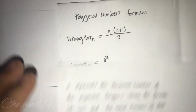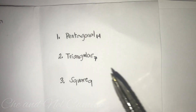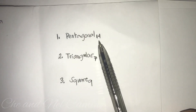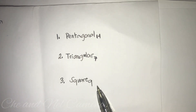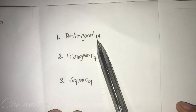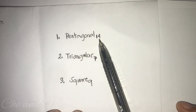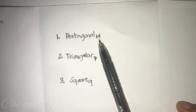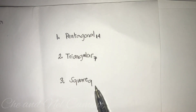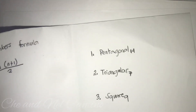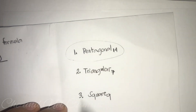Let's take these examples: Pentagonal(14), Triangular(7), and Square(9). In Pentagonal(14), the value of n is 14, meaning the pentagon is in the 14th place. The triangle is in the 7th place and the square is in the 9th place. We will first find the pentagonal number.